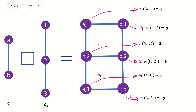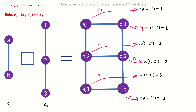I encourage you to pause the video and find the projections onto the second factor graph for each vertex in the product graph. Here are the projections onto the second factor graph. Notice that all we're doing with the first and second projection functions are extracting the first and second coordinates of our ordered pairs: p sub 1 extracts the first coordinate, p sub 2 extracts the second coordinate.